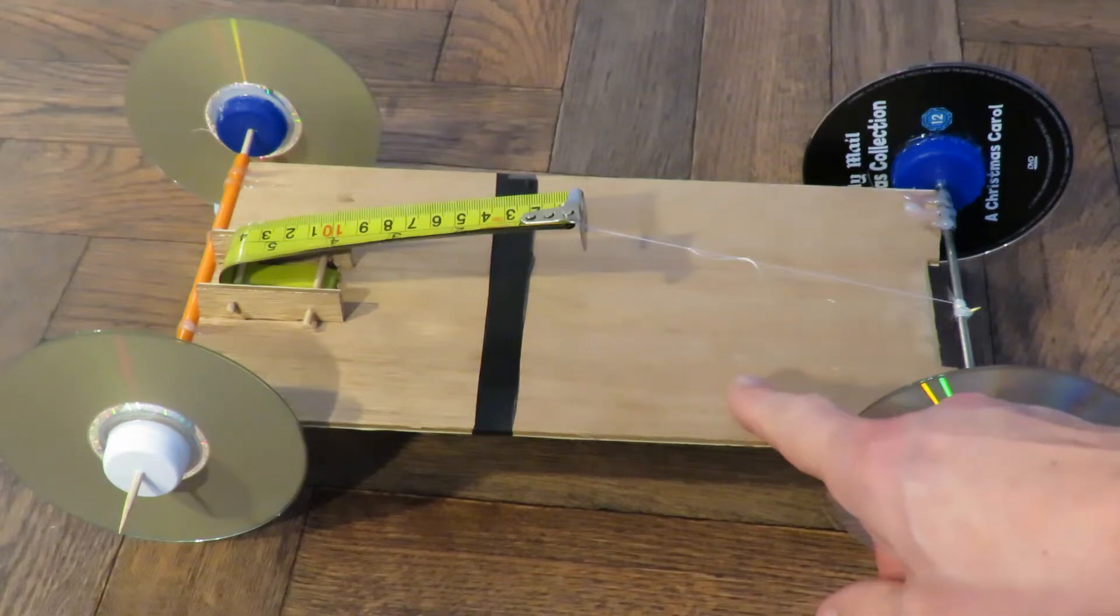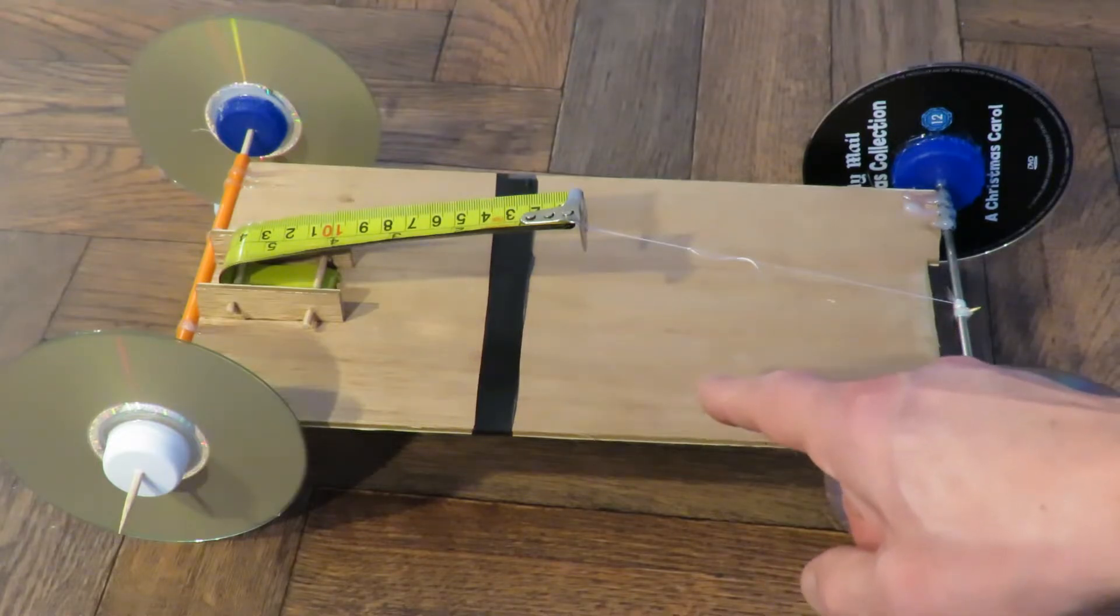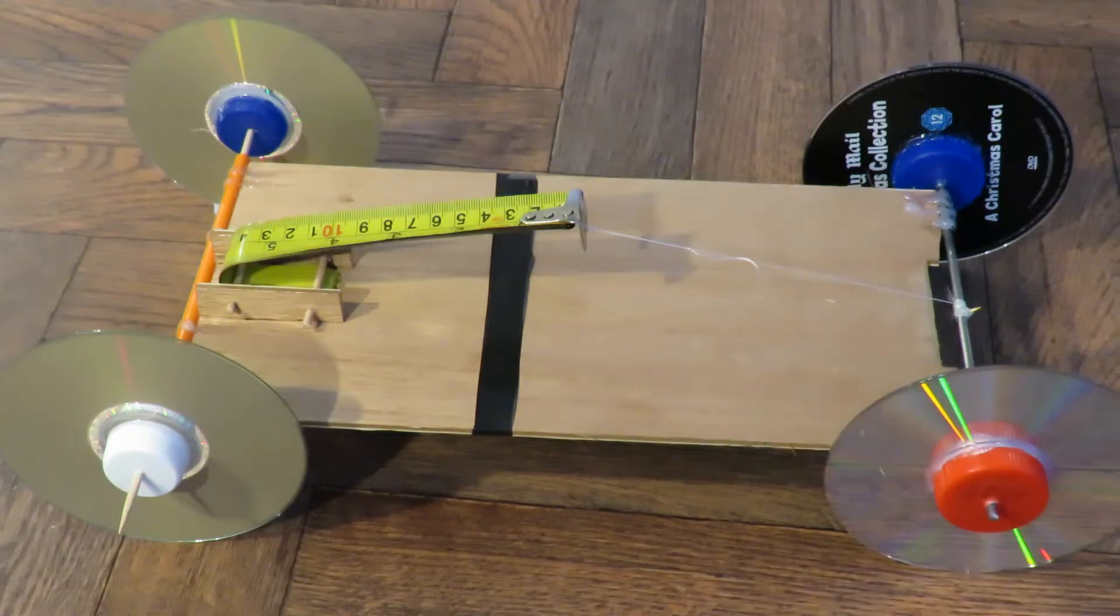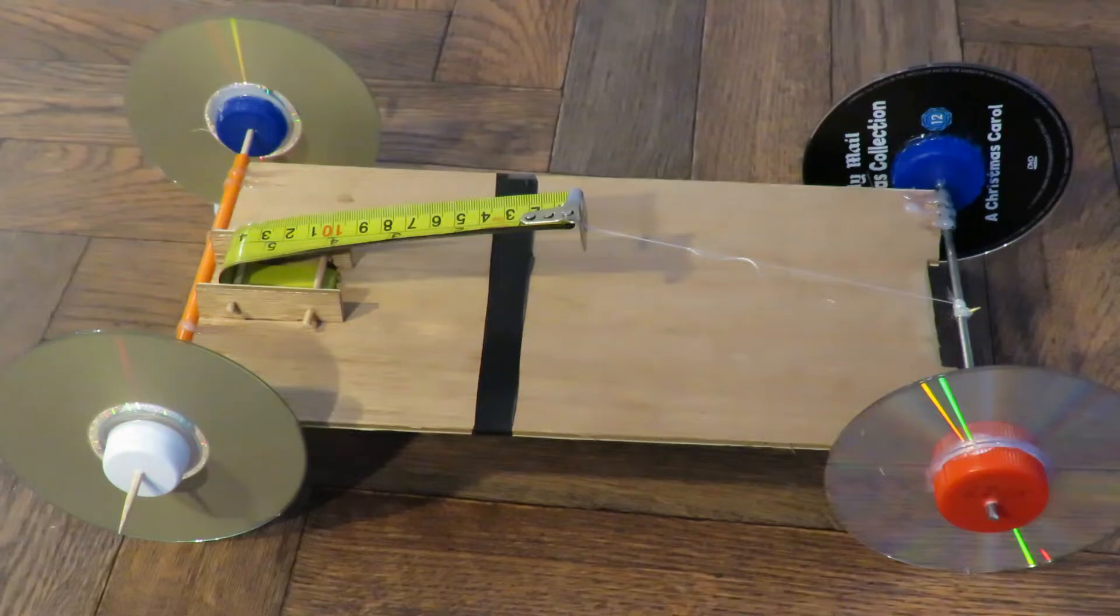There's not a build video here. You'll have to look in the video description, there's a link to the original build video because this original car was a rubber band powered car designed to carry a one pound weight for a certain distance, but it's a convenient basis to do this conversion on. So now we will get into the original video.